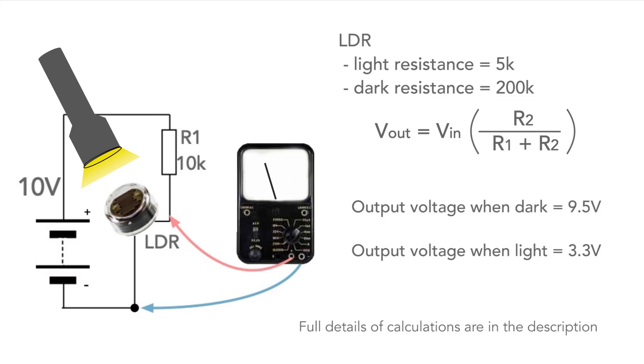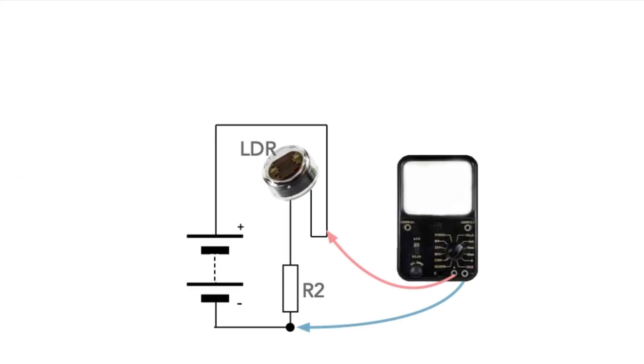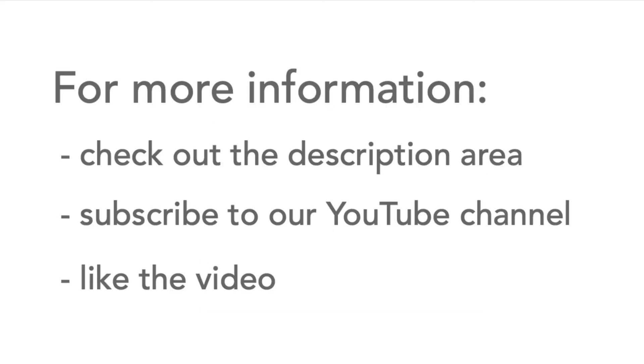If we place the LDR in the other position in the potential divider, then the voltage increases with increasing light and falls when it is dark.